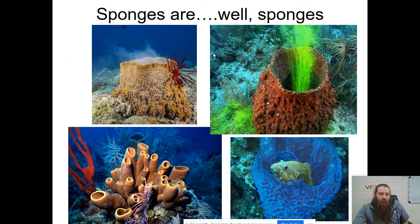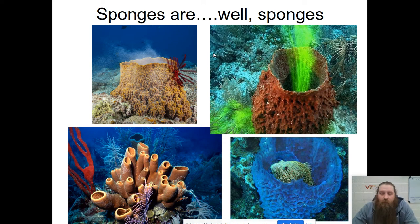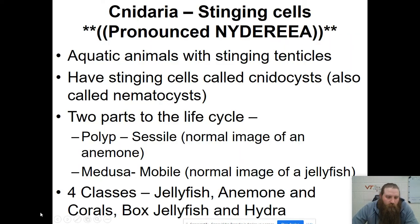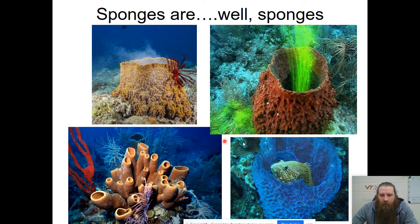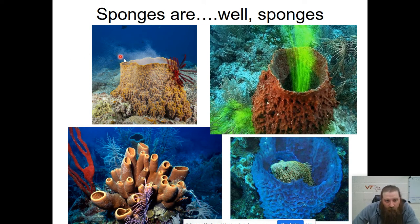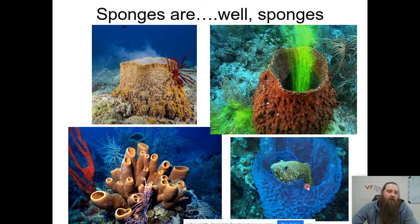Here are your sponges. On the top right you can see where some divers have dropped some dye — this green dye down at the base of the sponge — and you can see that the water is being pumped out of the sponge, which shows how it filters the water. Sponges come in all different shapes and sizes. Fish live in sponges, sometimes things will lay eggs in sponges, and it doesn't bother the sponge at all. Sponges are pretty unique, pretty cool organisms.